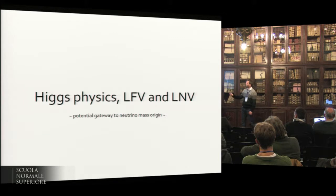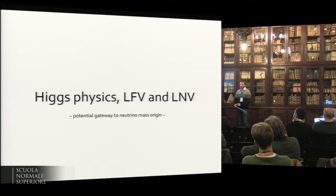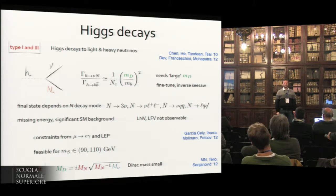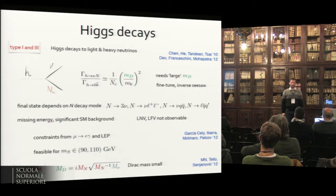In the second part, I'd like to talk about lepton flavor and number violation in Higgs physics — specifically the Higgs decay as a potential gateway to neutrino mass origin. The question arose whether the neutrino mass always comes through coupling to the Higgs. The mass of the neutrino, whatever method you get it, is always through the coupling to the Higgs by some mechanism, and there is no alternative.